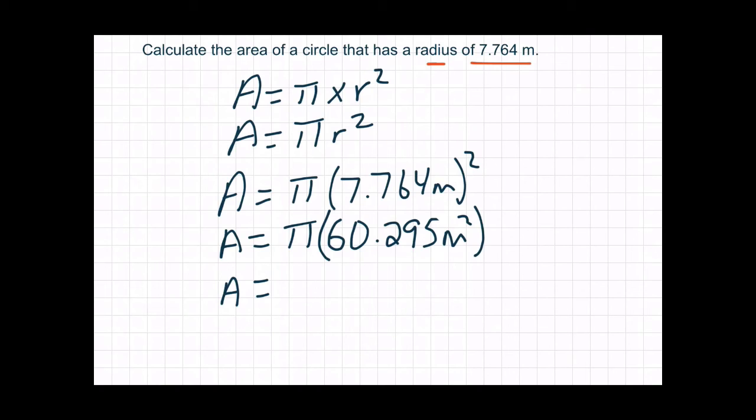So then I press 60.295 meters squared times pi, and I hit my equal sign, and I get 189.423 meters squared.